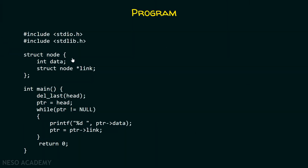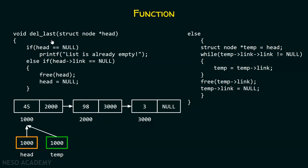Here is a program which helps us do the same thing — deleting the last node of the list by just using a single pointer. For this purpose, I have created one function del_last, which you can see here. In the previous lecture, we saw the del_last function, but I have changed it a little bit. In the else part, instead of two pointers, we have just one pointer, and we are using this for traversing the list.